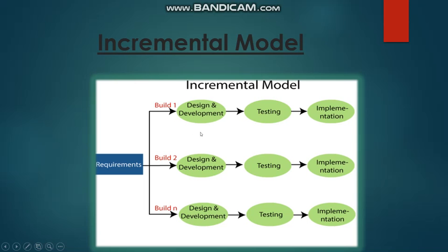Build one includes design and development — you take the requirement document and create a design for that particular application. For example, suppose the application has a sign-in page: the first build includes the sign-in page, the second build covers entering the application, and the third build covers going into your friend list and viewing your friends.